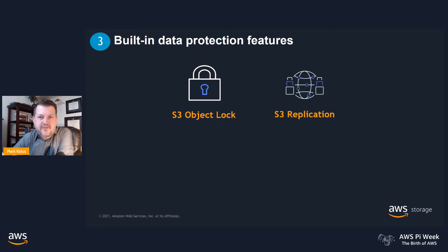A second critical data protection feature is S3 replication, which you can use for compliance requirements such as having to maintain a certain distance between your storage or storing data within certain countries. S3 replication offers numerous configuration options like same-region versus cross-region, or single-region versus multi-region. The session immediately preceding this one covered replication in detail, so if you missed that one, I encourage you to check it out.